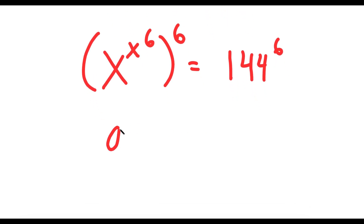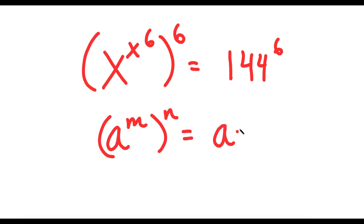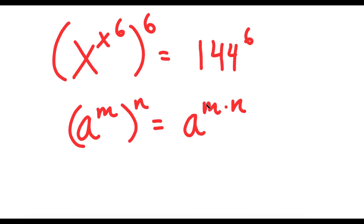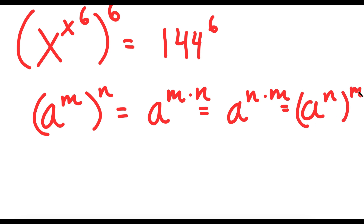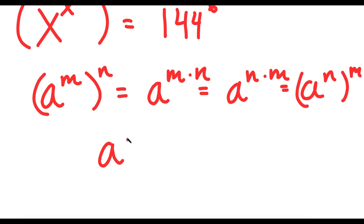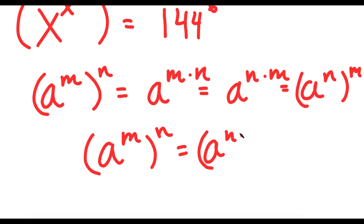Now, if I have something in the form a to the power of m to the power of n, this is equal to a to the power of m times n. And m and n, I can switch these two. So this is equal to a to the power of n times m. Now, if a to the power of m times n is equal to a to the power of m to the power of n, then a to the power of n times m should equal a to the power of n to the power of m. Meaning, a to the power of m to the power of n is equal to a to the power of n to the power of m.